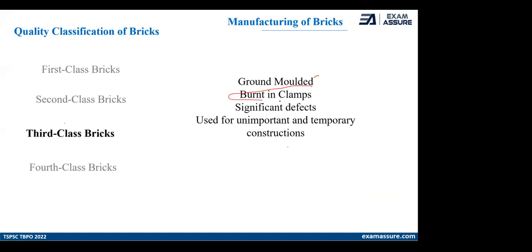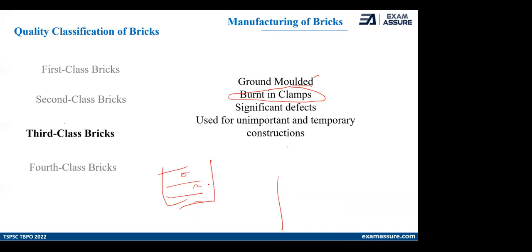Third class brick is again ground molded, but the change is it is burned in clamps. In clamps and kilns there are separate burning units. In clamps, separate layers of bricks are arranged and between them fuels are arranged and they are burned — so proper burning does not happen there; there are workmanship issues. In kilns there is a proper arrangement, proper burning arrangement, and the burning happens at an even rate — that is why kilns have good burning properties.